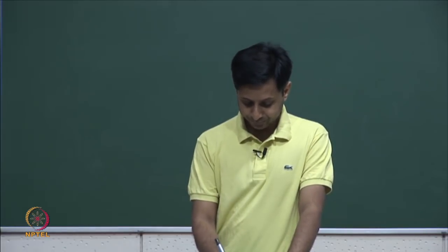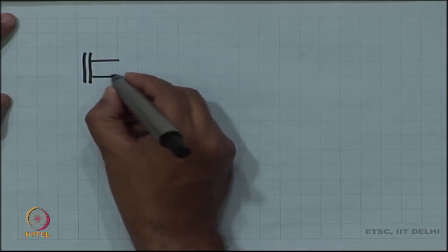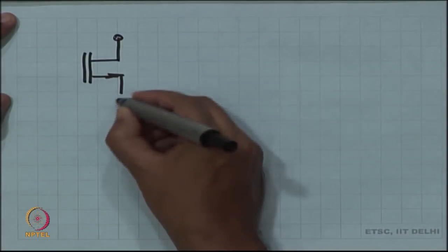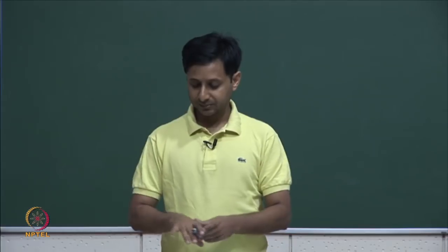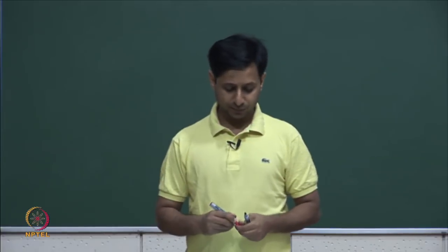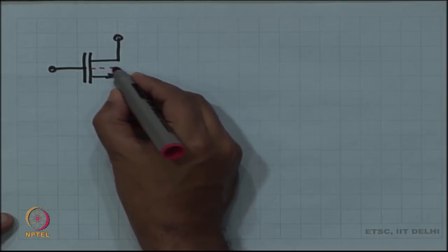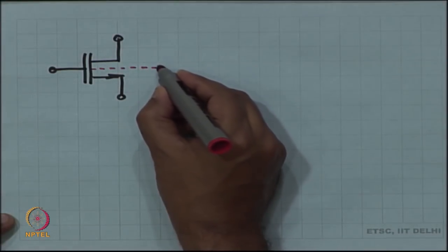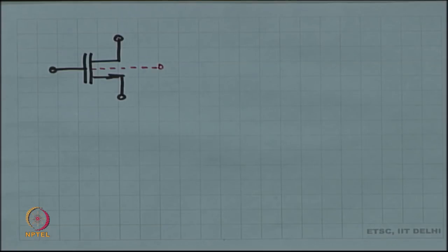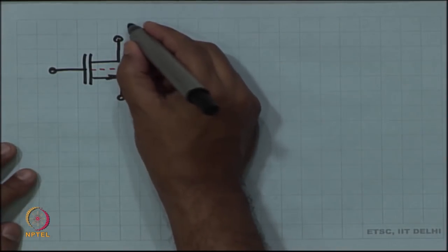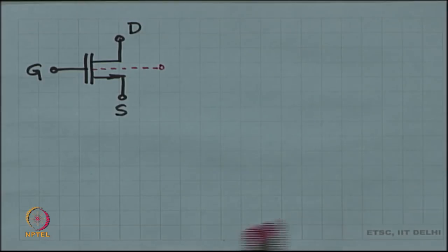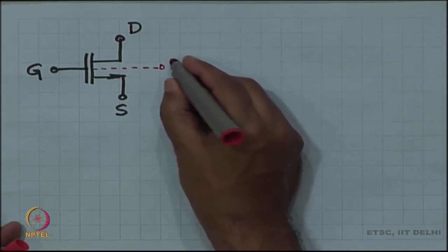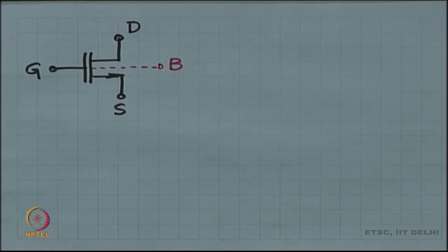The symbol we are going to use has three main terminals. There also happens to be a fourth terminal, which is underplayed. The terminals are labeled drain, gate, and source. This fourth terminal is called the body, but do not worry too much about it for now. The source is the one with the arrow.